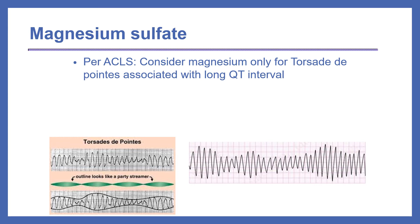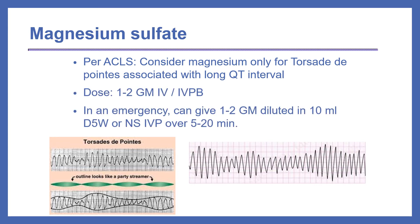The arrhythmia for torsade de pointes can be seen in the diagrams — the outline looks like a party streamer. The dose of magnesium in these cases is 1 to 2 g IV or IV piggyback. In an emergency, we give 1 to 2 g of magnesium sulfate diluted in 10 mLs of D5W or NS. We can give it IV push, but give it slowly over 5 to 20 minutes.